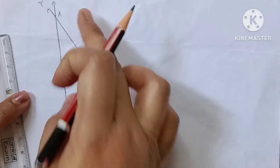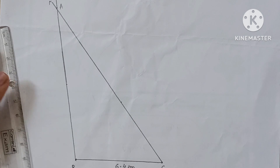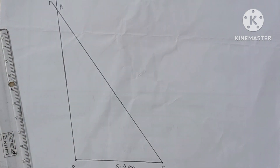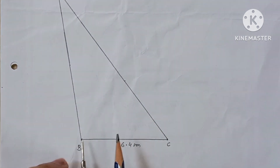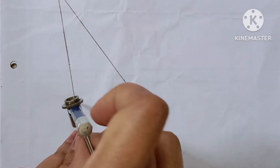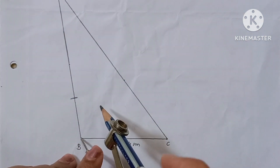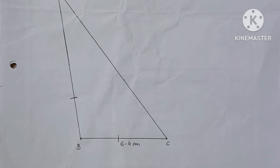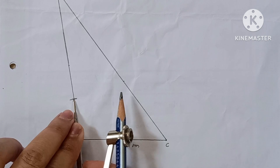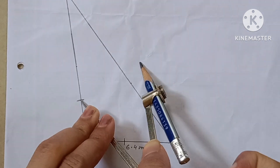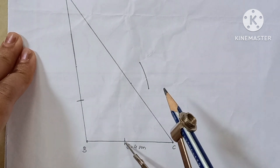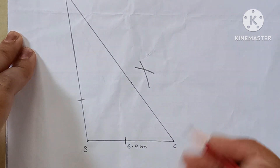This is our point A — this is our triangle ABC. Now for the incircle, you can bisect the angles. First, bisect angle B: take some distance in your compass, keep your compass point on B, and make two arcs here and here. Then keep your compass point on those arcs, increase the distance, and make an arc outside. Now join these two points.